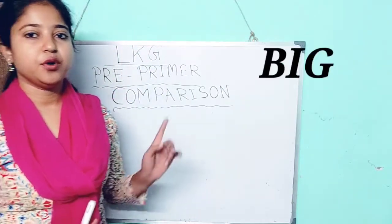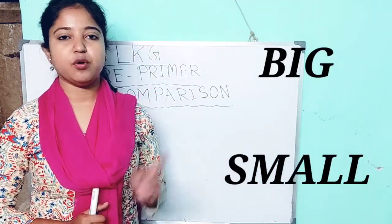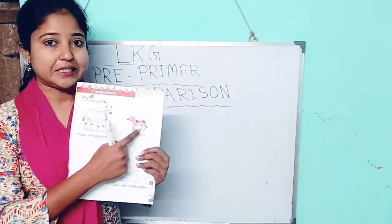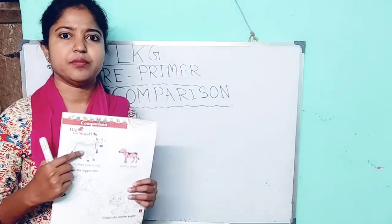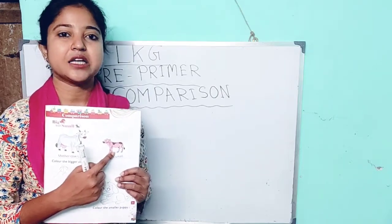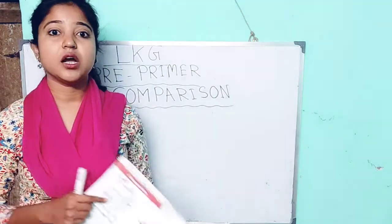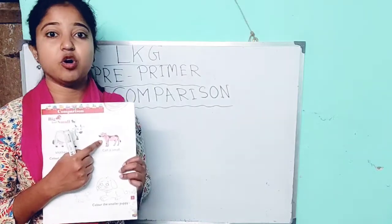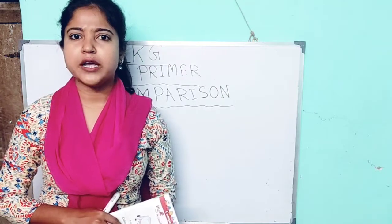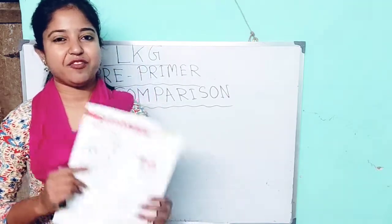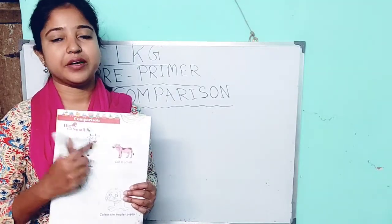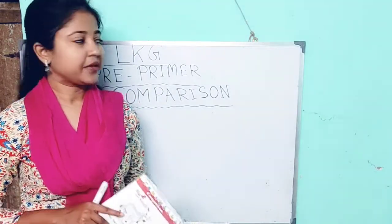First we will do big and small. In your book you can see there are two pictures given — one is of a mother cow and another is of a baby cow, that is a calf. So the mother cow is very big and the baby cow, or the calf, is very small. Just like you are small and your mother is big — in the same way, the mother cow is big and the calf is very small.